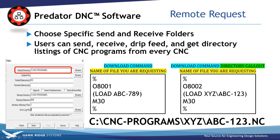Here's an example of a remote request program. You have the blue area as the download command and the yellow section as the name of the file you are requesting. Once you have edited this program, you send it from the control and it tells Predator to queue up the file and send it to the CNC.